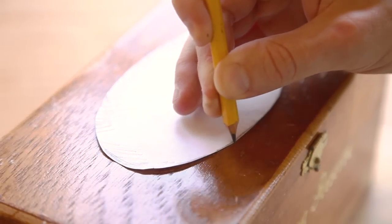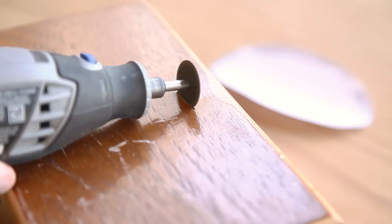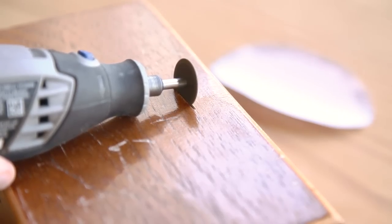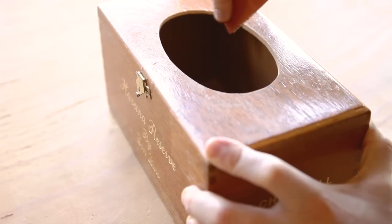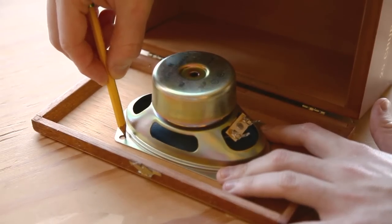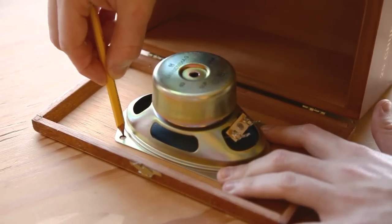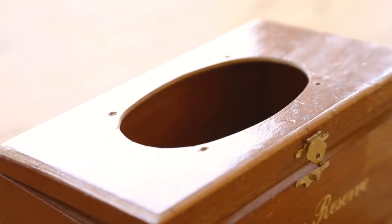Trace the shape of your speaker on paper, then cut it out and use it as a template to mark your speaker box for cutting. Cut out the hole using a rotary tool with a cutoff disc and then sand the edges smooth. Next, place the speaker itself on the box to mark the mounting holes. Drill the speaker mounting holes.